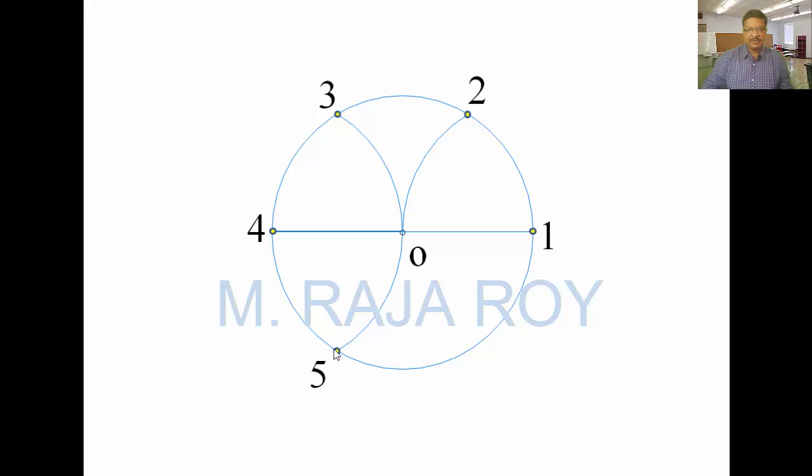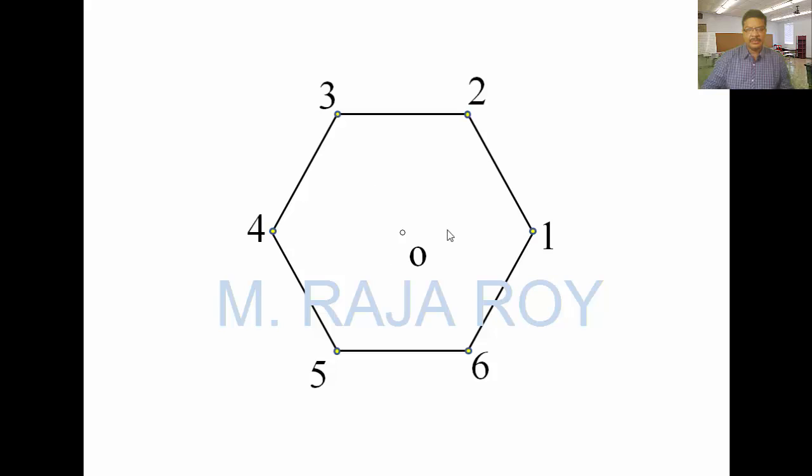This point is 5. Next, take 1 as center, O1 as radius, draw an arc like this. This will be 6. Now, join all these points. This is the required hexagon. After getting the hexagon, erase the circle. This is the simplest way to draw the hexagon.